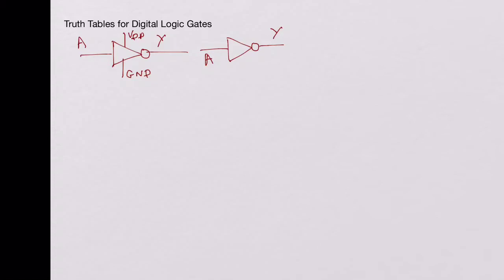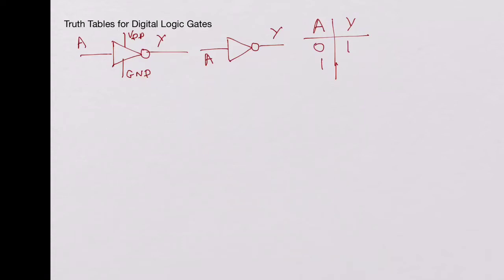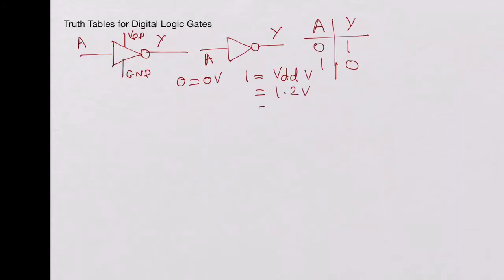Looking at the truth table of the inverter, we have A and Y. If A is 0, Y is 1. And if A is 1, Y is 0. What does this really mean? 0 and 1 are the VDD levels — 0 is 0 volts and 1 is VDD volts, whatever the VDD level is. It could be 1.2 volts or as high as 5 volts. So 0 and 1 basically mean the VDD levels. This is the truth table for the inverter.